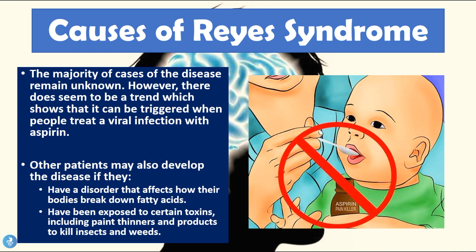The majority of cases of Reye's syndrome remain of unknown cause, however there is a clear trend showing it can be triggered when people treat a viral infection with aspirin. Other patients may develop the disease if they have a disorder affecting how their bodies break down fatty acids, or if they've been exposed to certain toxins including paint thinners, pesticides, and insecticides. The most commonly known trigger, however, remains aspirin use during a viral infection such as chickenpox or influenza.